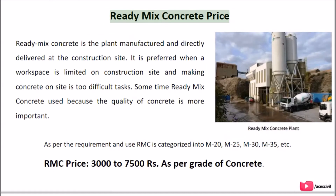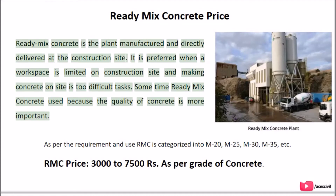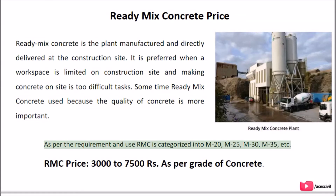Ready Mix Concrete Price: Ready Mix Concrete is plant-manufactured and directly delivered to the construction site. It is preferred when workspace on site is limited and making concrete on site is too difficult. Sometimes ready mix concrete is used because quality control is more important. As per requirement and use, RMC is categorized into M20, M25, M30, M35, etc. RMC Price: Rs. 3,000 to 7,500 as per grade of concrete.